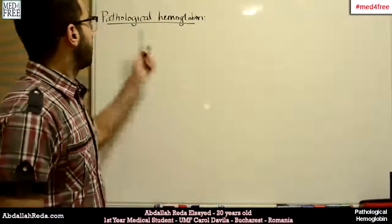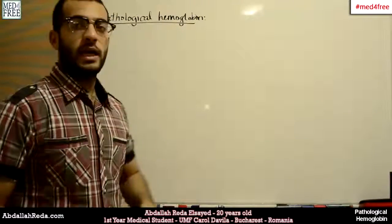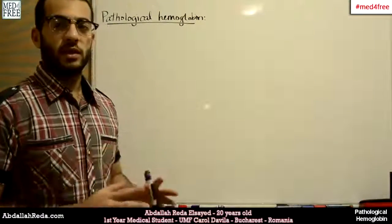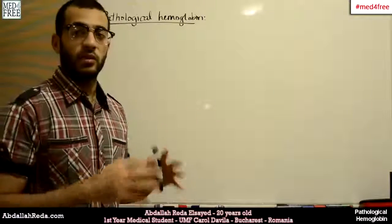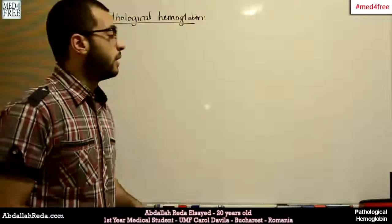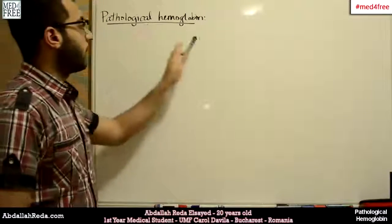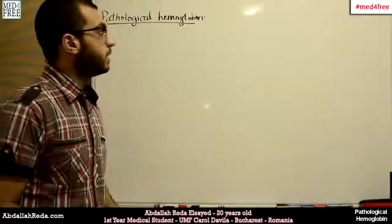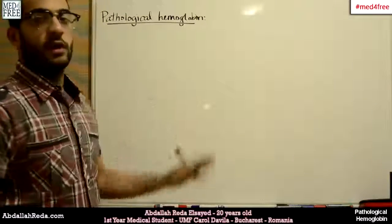Today we're going to talk about pathological hemoglobin. Last time we were talking about physiological hemoglobin — hemoglobin that's normally found in the human body. Today we're going to talk about hemoglobin which, if found, means that there's a pathology.